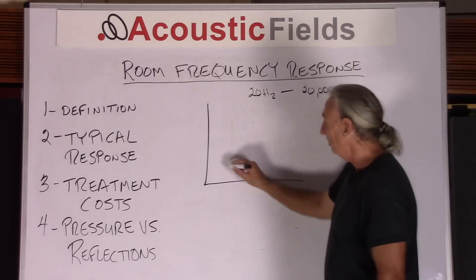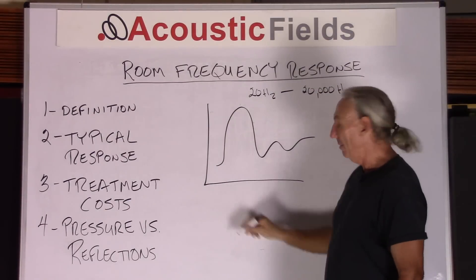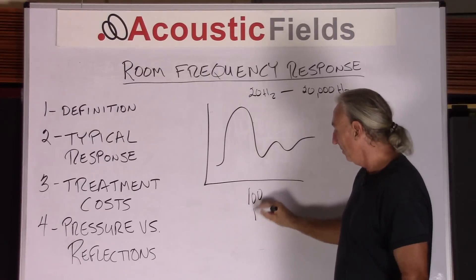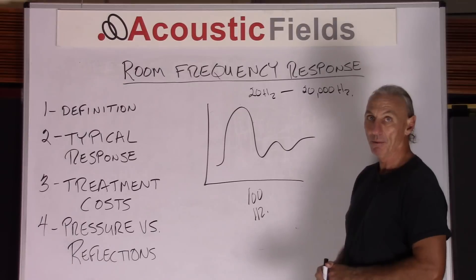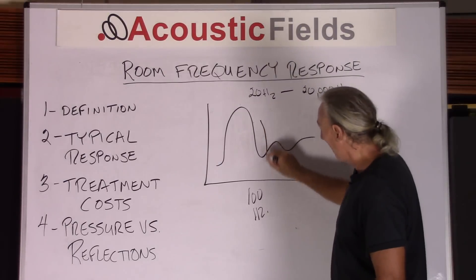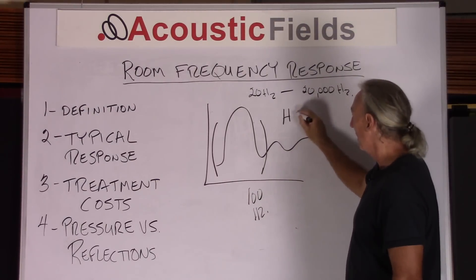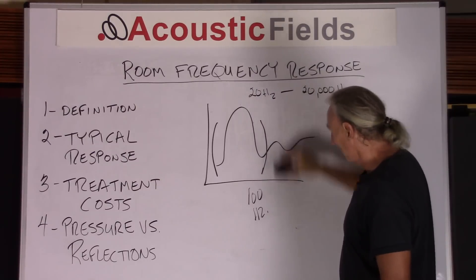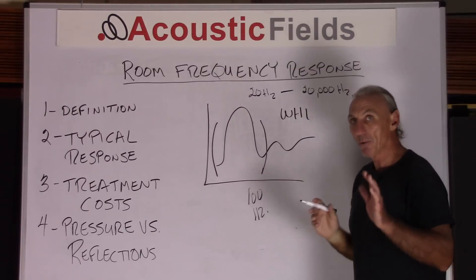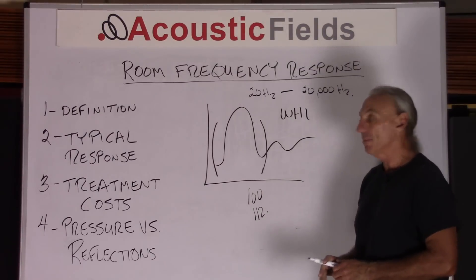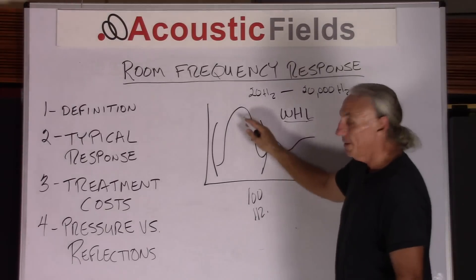What do we see in today's small rooms? We always have this big bump below 100 hertz, and that's just characteristic and typical of all small rooms. This bump is a direct relationship to the width, height, and length of your room. That's why we're always trying to get people to follow that width, height, and length ratio that minimizes this.